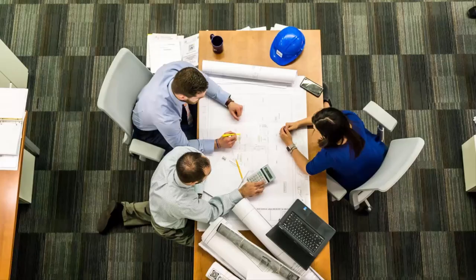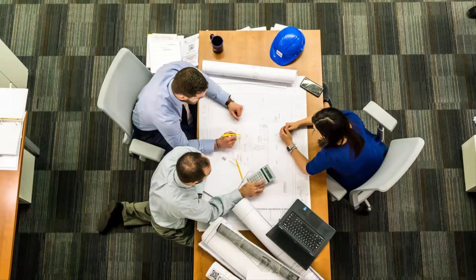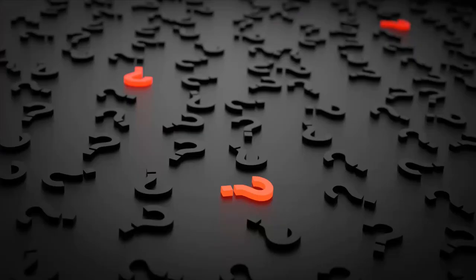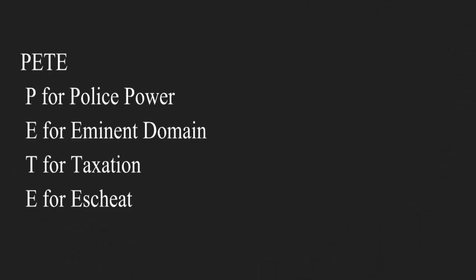Government powers range from small to large. The most common example of a government power is zoning. There are many acronyms to remember government powers within real estate. The best acronym to use is PEAT, which stands for P for police power, E for eminent domain, A for taxation, and T for escheat.